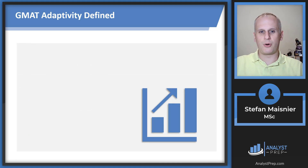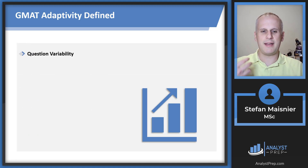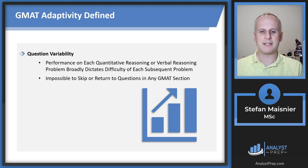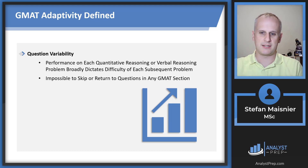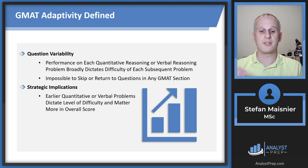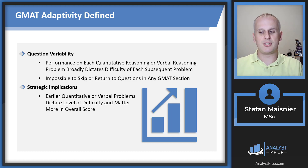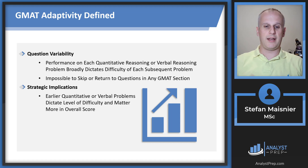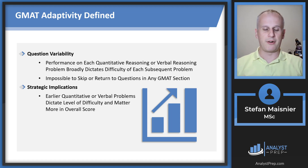Let's talk about the GMAT's adaptivity. The GMAT has question variability, meaning your performance on each quantitative or verbal reasoning problem broadly dictates the difficulty of each subsequent problem. It's impossible to skip or return to any questions in any GMAT section because of this. Strategically, the earlier quantitative or verbal problems matter more for your overall score — the exam is trying to determine your proficiency level early on, so you have a better opportunity to get ahead if you perform well earlier rather than later.